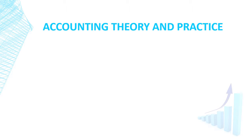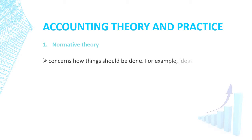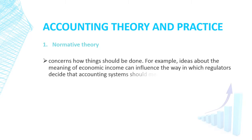Normative theory. This concerns how things should be done. For example, ideas about the meaning of economic income can influence the way in which regulators decide that accounting systems should measure profit.